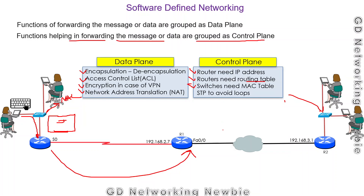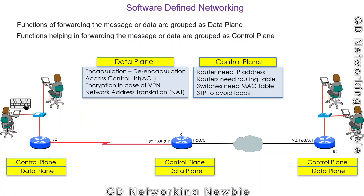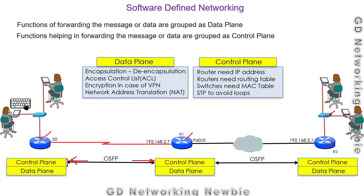All networking devices perform both data plane and control plane functions. On the control plane, devices exchange routing protocol information — for example, OSPF exchanges routing information between routers. OSPF fills up the routing table, and that routing table is then used by the data plane to forward data from one point to another.